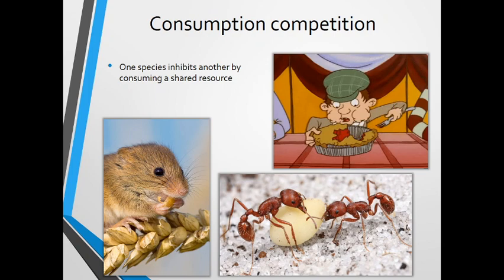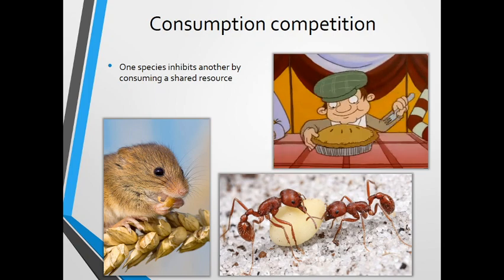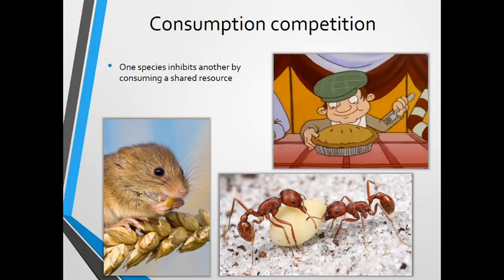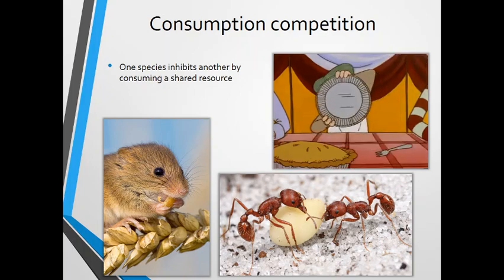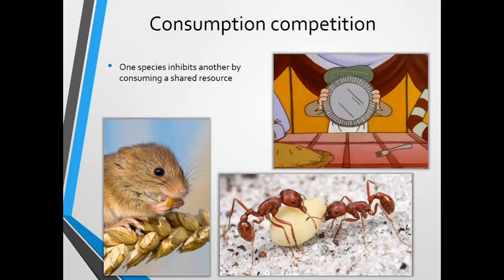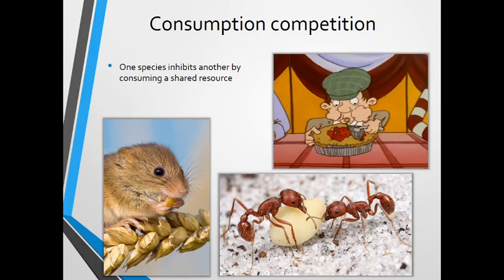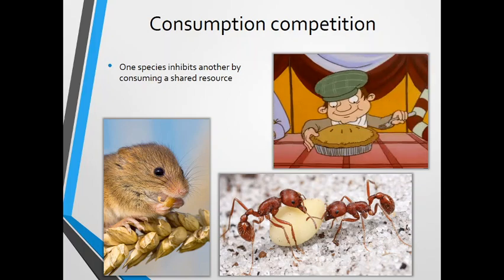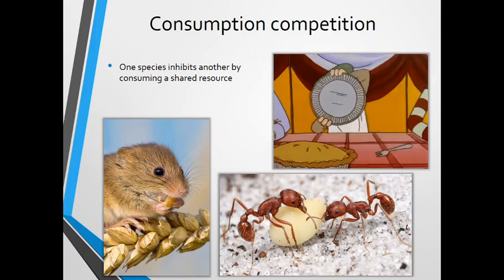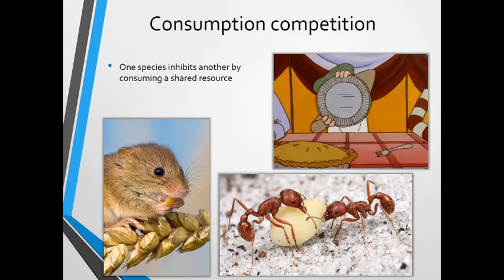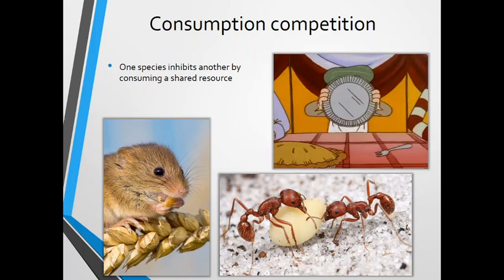The first one, consumption competition, is essentially exploitative competition in its simplest form, where one species inhibits the growth, fitness, or abundance of another by consuming that shared resource — maybe just part of it, maybe the majority. When two species are consuming the same resource, they're competing over it. This is pretty much straightforwardly exploitative competition.